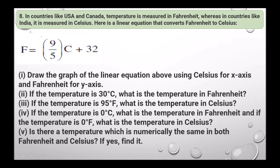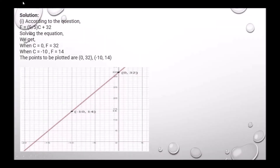Solving the equation F equals 9/5 C plus 32 to find plotting points: if C equals 0, then F equals 32; if C equals minus 10, then F equals 14. The points to be plotted are (0, 32) and (-10, 14), and this is the graph.